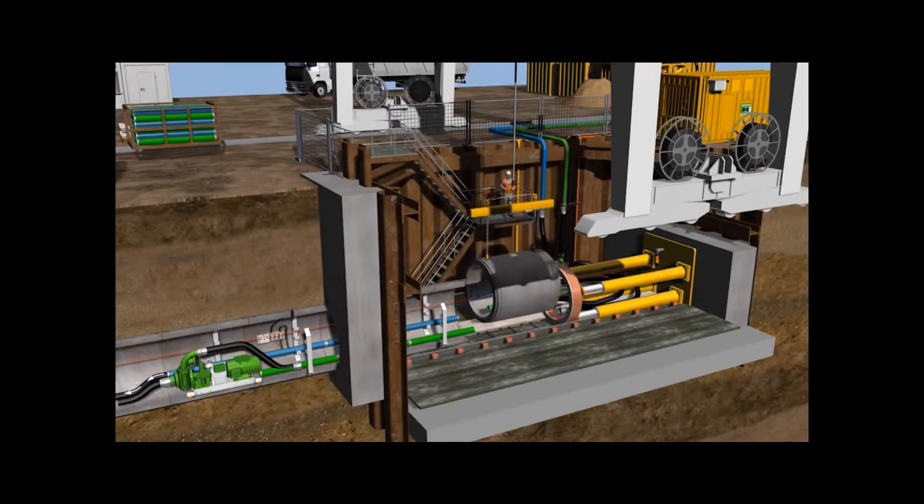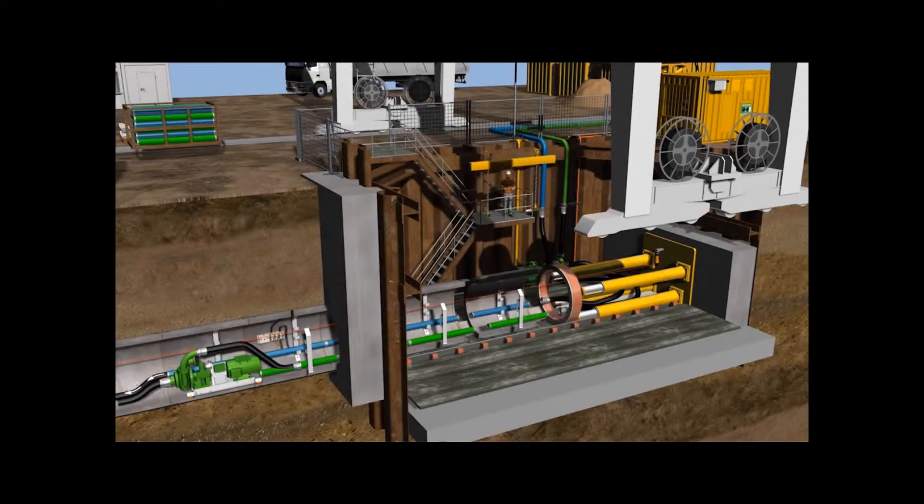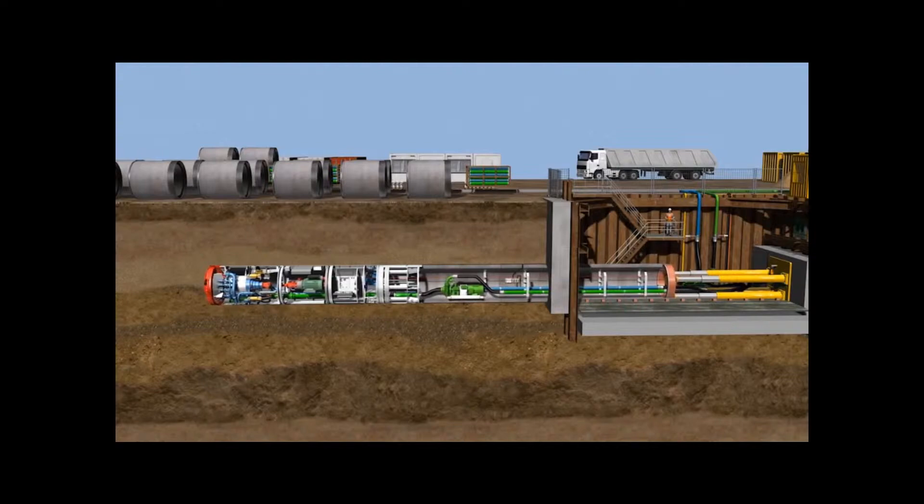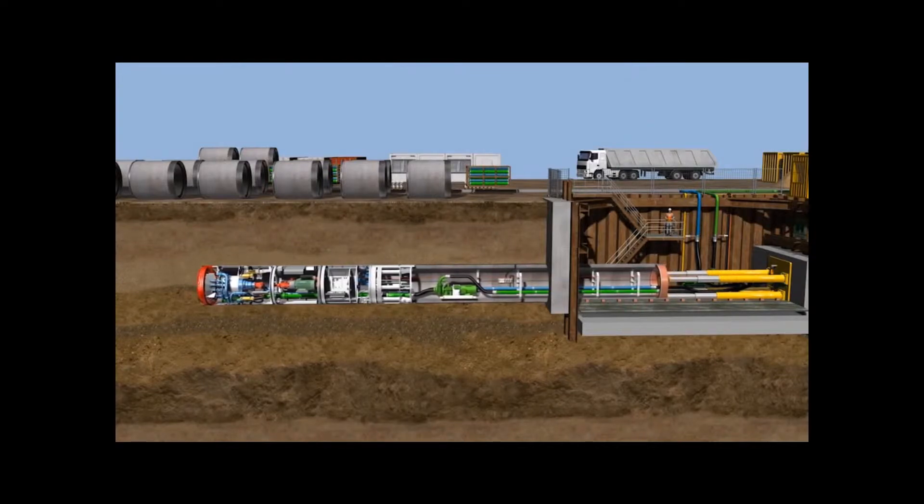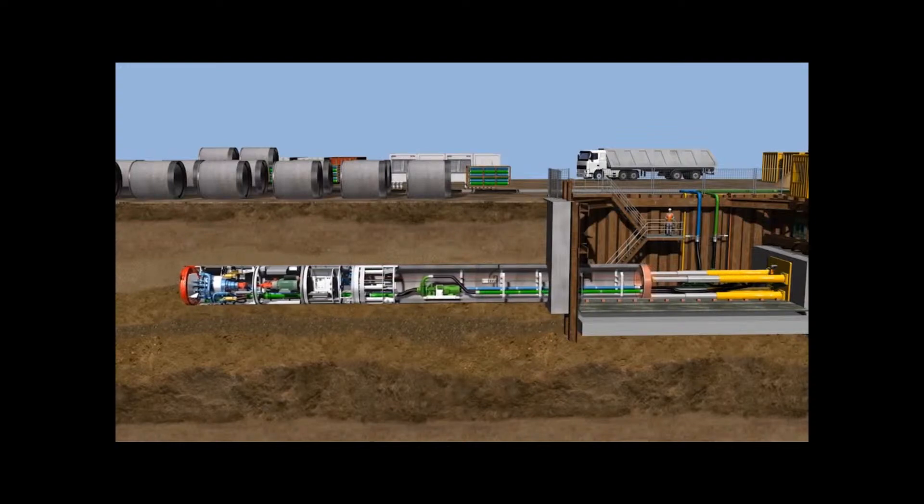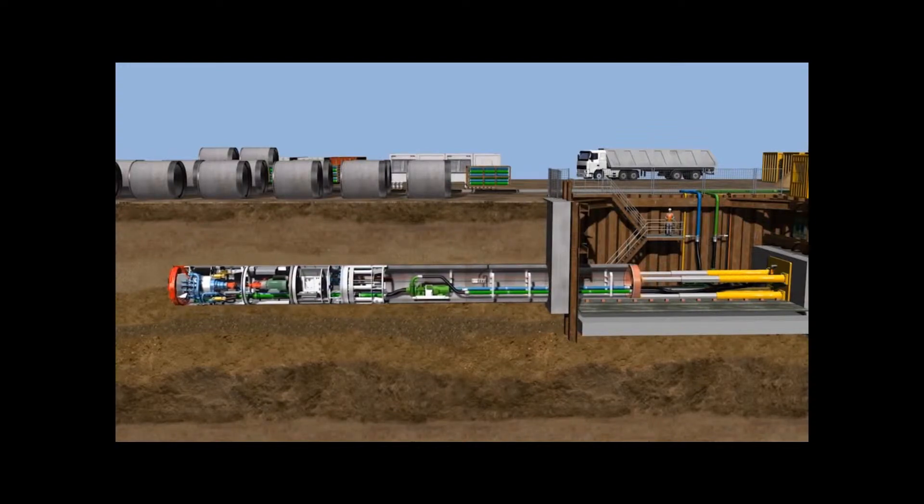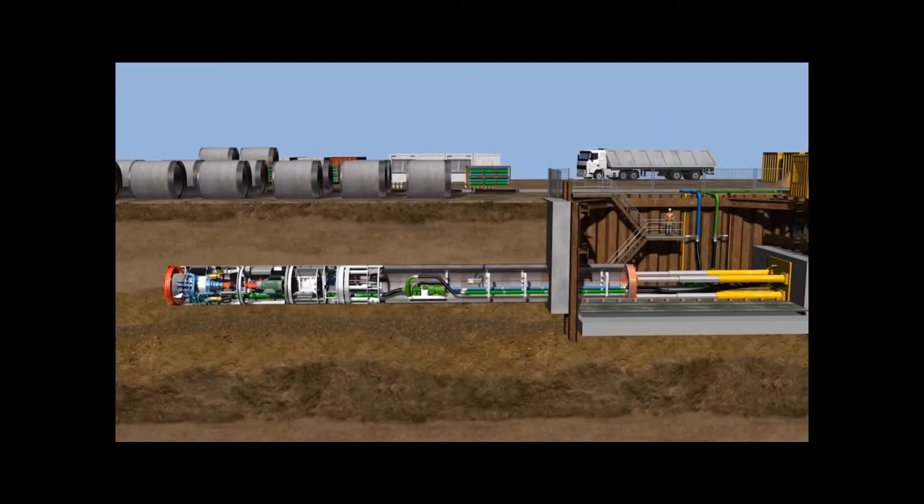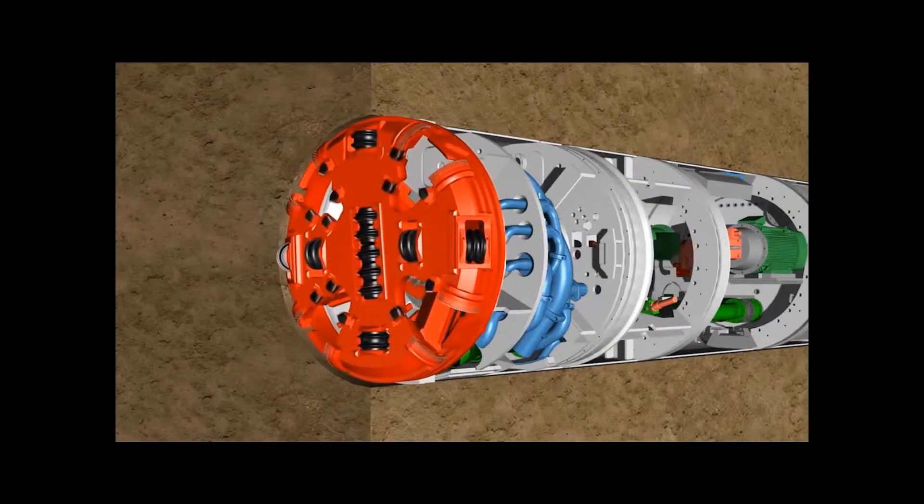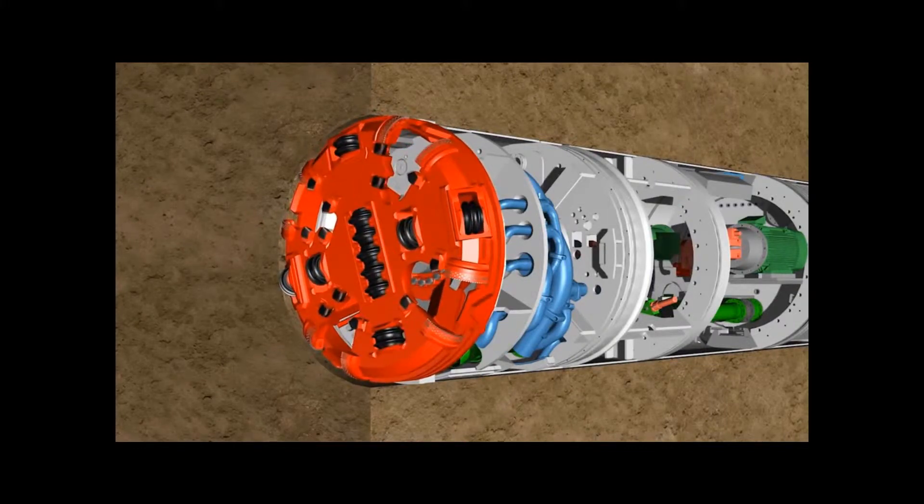Now regular tunneling begins. After every stroke, a new product pipe is installed. When the main jacking station extends its cylinders, it pushes the entire pipeline and tunneling system forward. The force of the presses is transferred to the rotating cutting wheel, and the cutting tools on the cutting wheel remove the soil from the tunnel face during tunneling. The cutting wheel is fitted with disc cutters and cutting knives. The type and number of tools are determined by the anticipated geology.